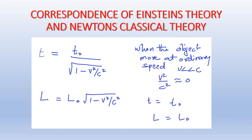Consider the equation given by Einstein for time dilation: T = T₀ / √(1 − V²/C²), where V is the speed of the object and C is the speed of light, and T₀ and T are times in two reference frames — one moving and one at rest. Length contraction is given by L = L₀ √(1 − V²/C²). These equations are applicable to any speed. Now for ordinary speeds where V is very much less than C, we can approximate V²/C² to zero. Then T = T₀ and L = L₀. That means at ordinary speeds, Einstein's equations reduce to Newtonian mechanics.